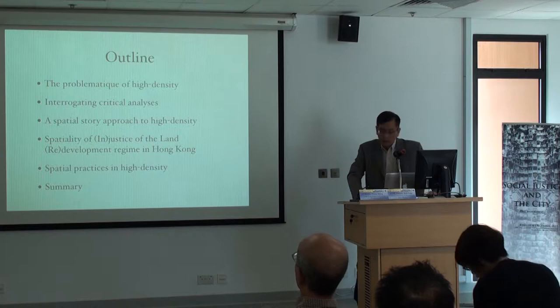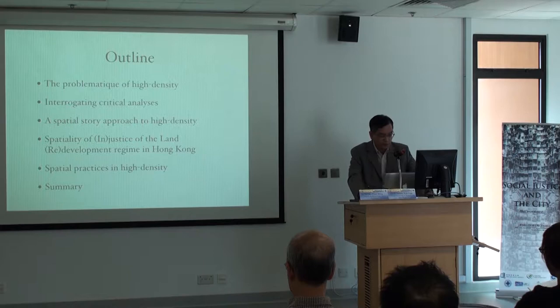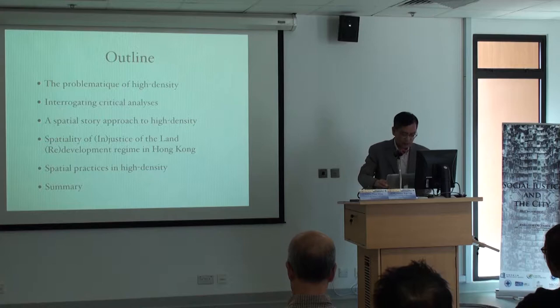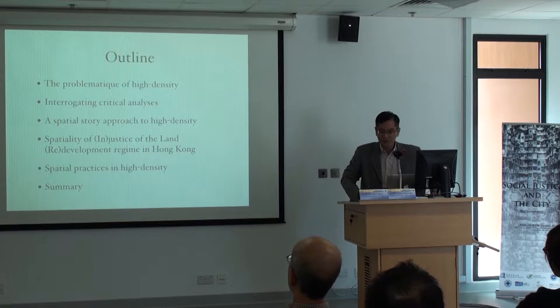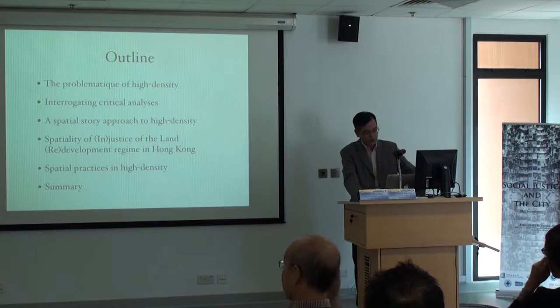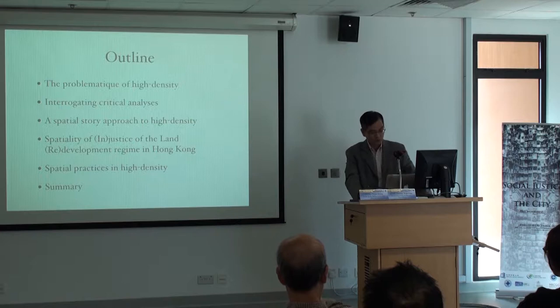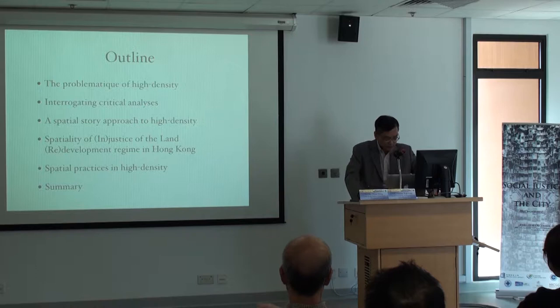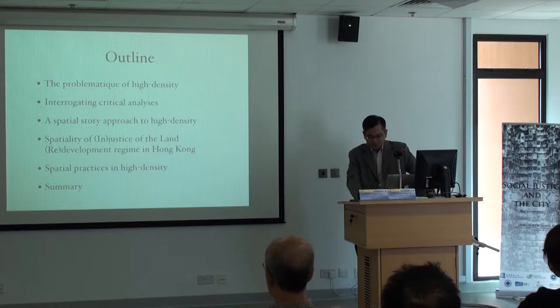What we will do today is, first of all, problematise the whole issue of high density. In the problematisation, what we try to do is to interact with some of the critical analysis, and then propose what I simply call a spatial story of high density. Then try to figure out the situation in Hong Kong, relate it to the land redevelopment regime, and illustrate how the working of the regime has reproduced social injustice by examining the spatial practices of particular households living in high density.